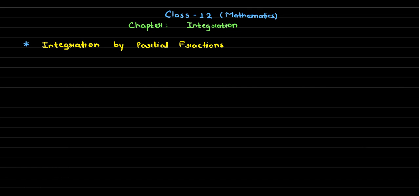Starting with this question: we have learned so far how to find the integral of an expression where the denominator was simply a product of two or more linear factors. For those kinds of questions, we first learned to decompose the fraction using partial fractions and then integrate by reducing it to one of the standard forms. That was the whole procedure.